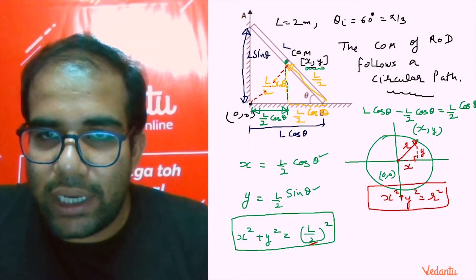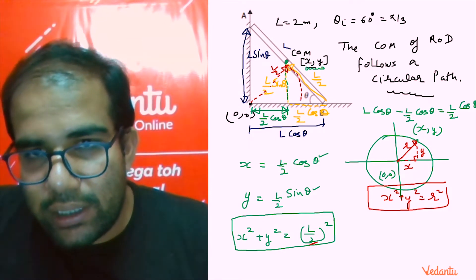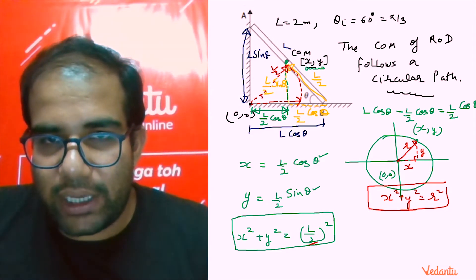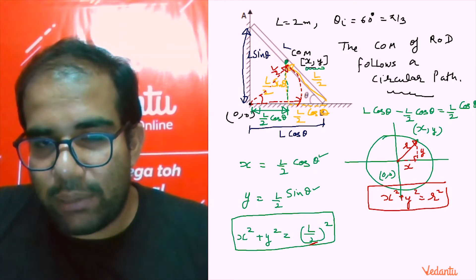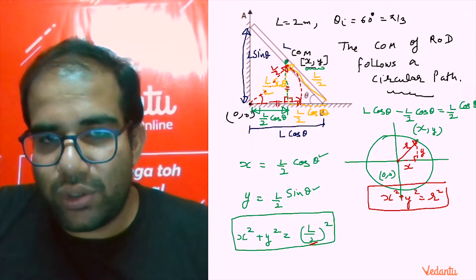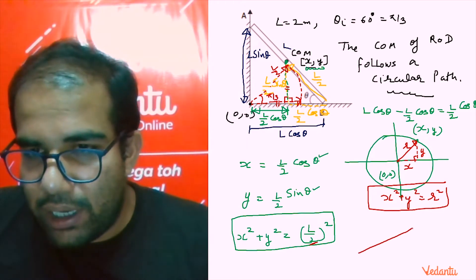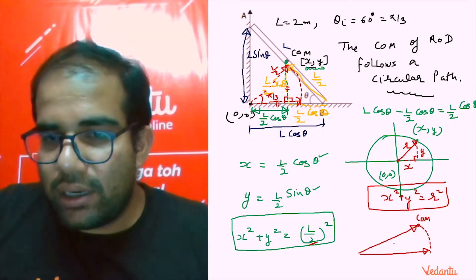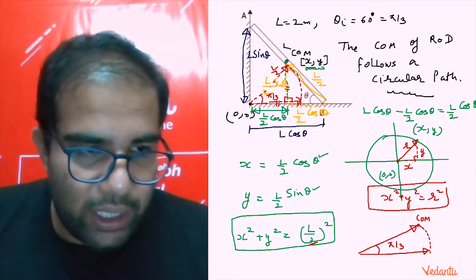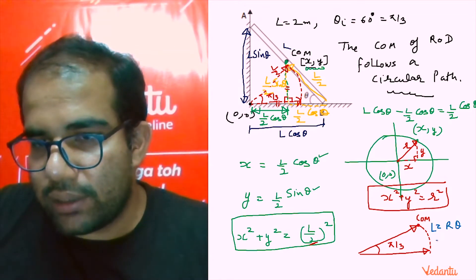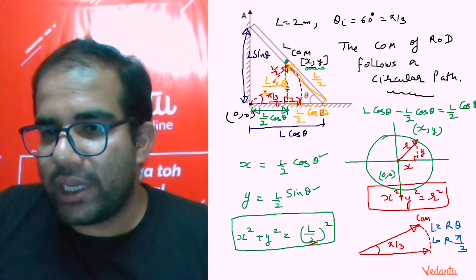Thus center of mass, L by 2 is rotating in a circle. I will go to the next slide. This angle is pi by 3. Congruent triangles, I guess this side is common, this is 90, this is 90, so you can say this angle and this angle are equal. So you can feel that the center of the rod is following a circular path and the radius moved is pi by 3.